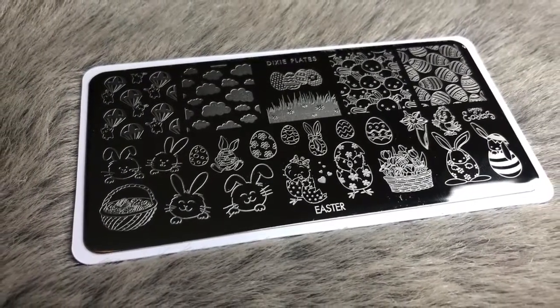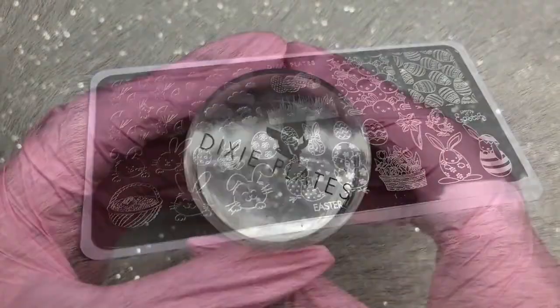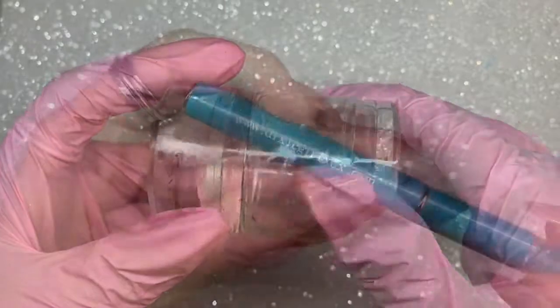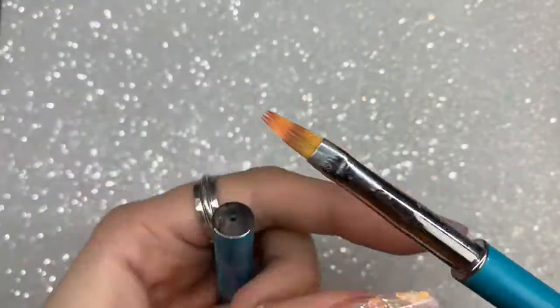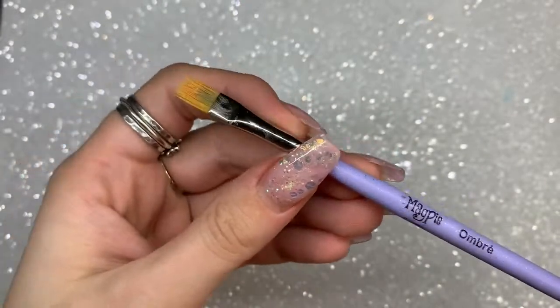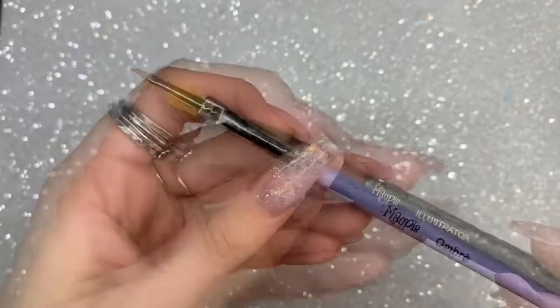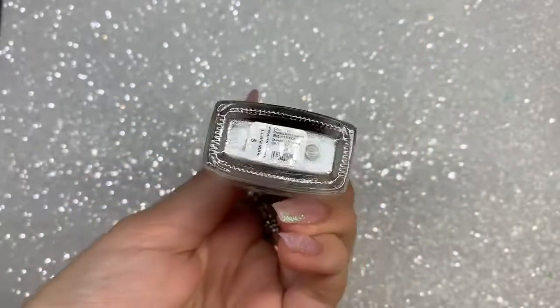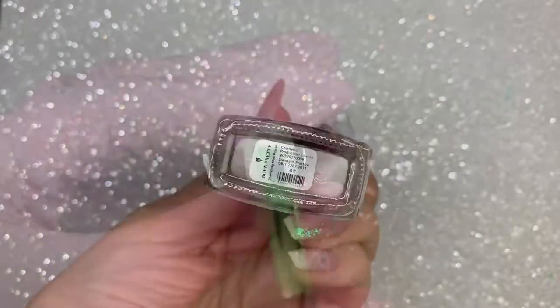I'm also going to be using my Dixie Plates Clear Duo Diamond stamper, my Dixie Plates ombre brush, and the Magpie ombre brush. They are slightly different. I'll also use the Magpie Illustrator nail art brush. For stamping polish, I'm using Born Pretty number four, which is their white.